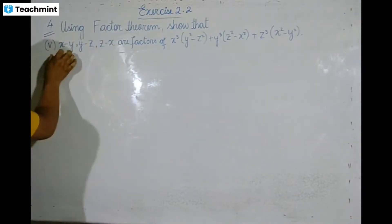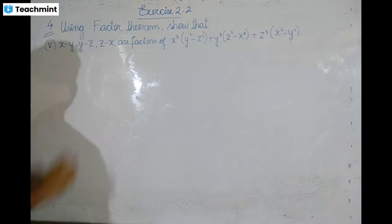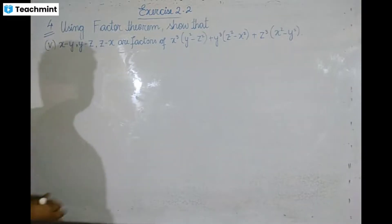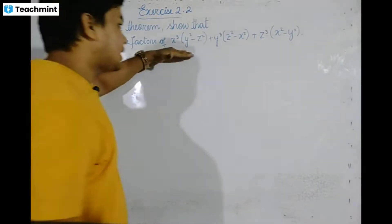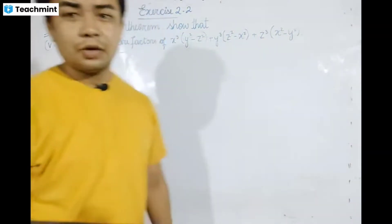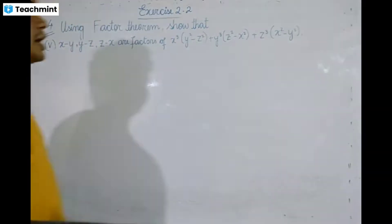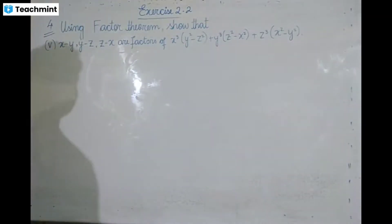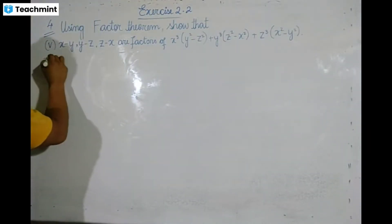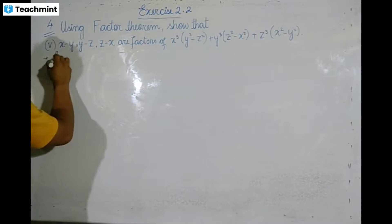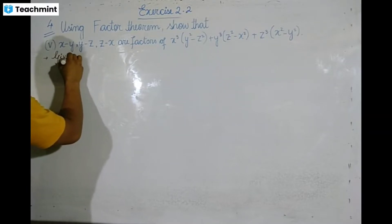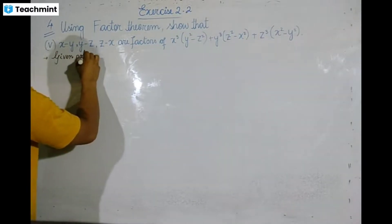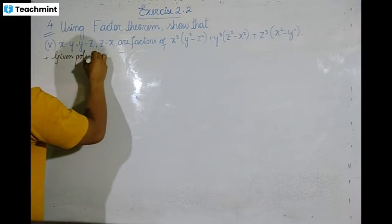The given polynomial involves x minus y, y minus z, z minus x. We are given this polynomial and need to find its factors using the factor theorem.